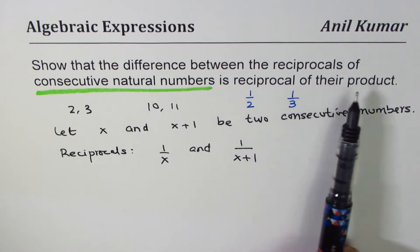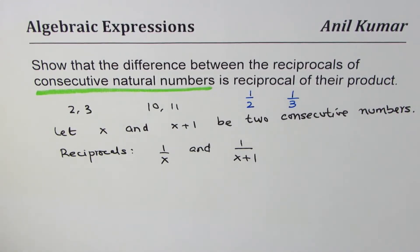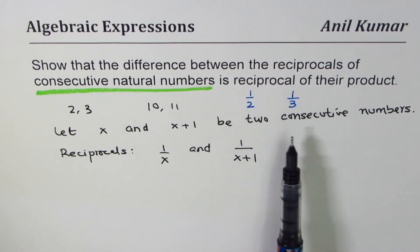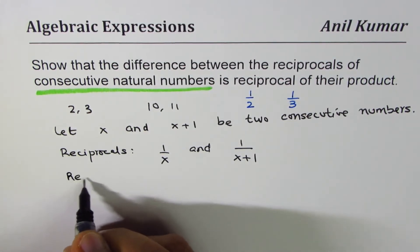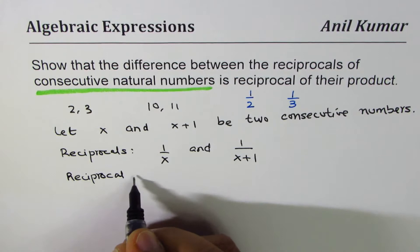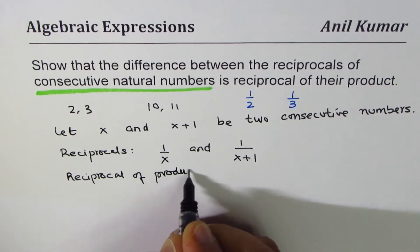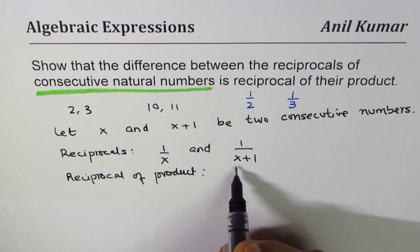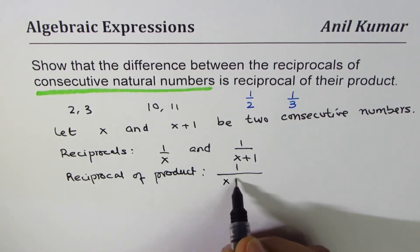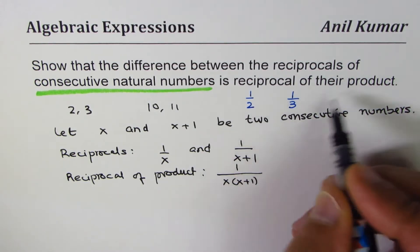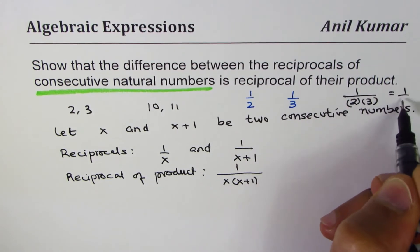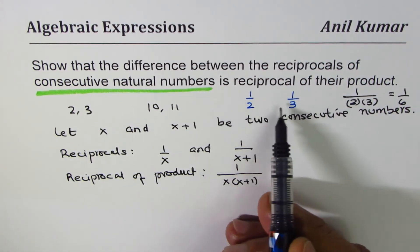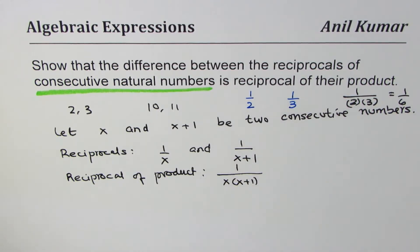The question says the difference equals the reciprocal of their product. The product means we multiply them, so the reciprocal of the product is one over X times X plus one. In the example with 2 and 3, that is one over six. So the difference of the reciprocals should equal one over six.